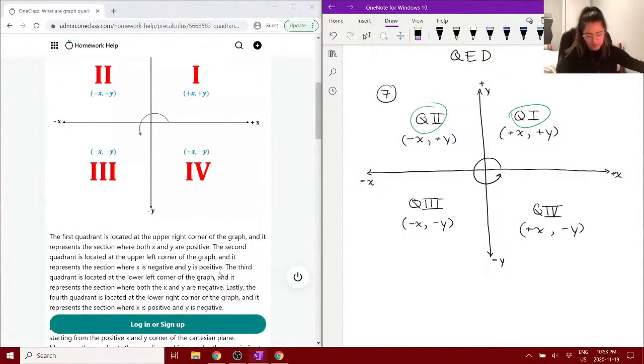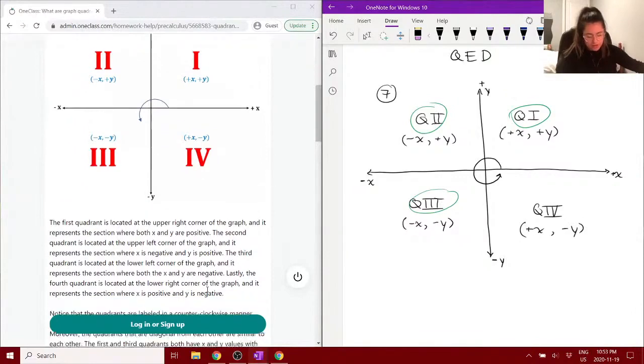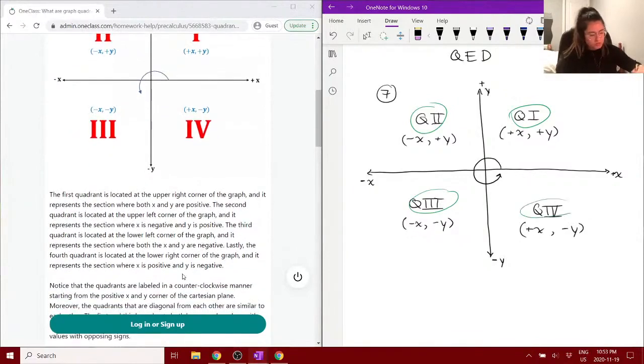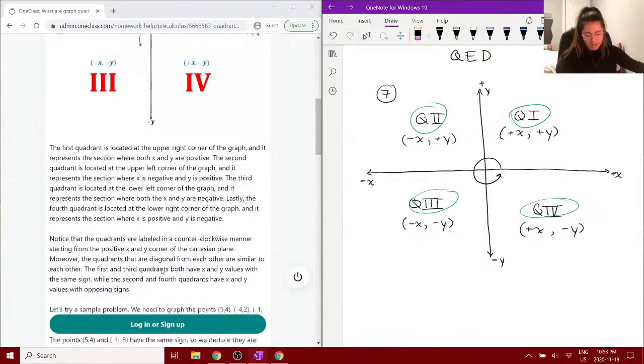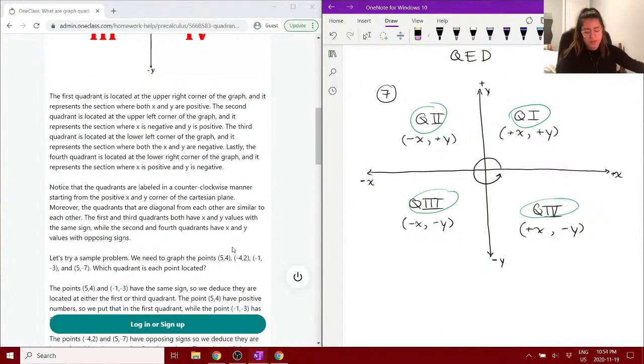Let me follow along here. The third quadrant is located in our left corner, as we saw, and that's a section where both x and y are negative. And lastly, our fourth quadrant, we have the positive x and negative y.